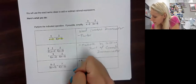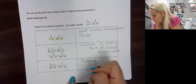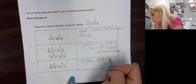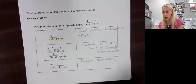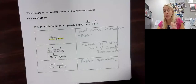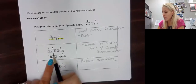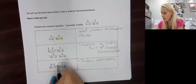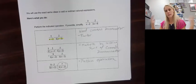Since we have the common denominator, now we perform the operation — in this case, subtraction. This example is a fairly easy subtraction. So 9 minus 2 is 7 over the common denominator. Check if there's anything to reduce — if not, we're all set.